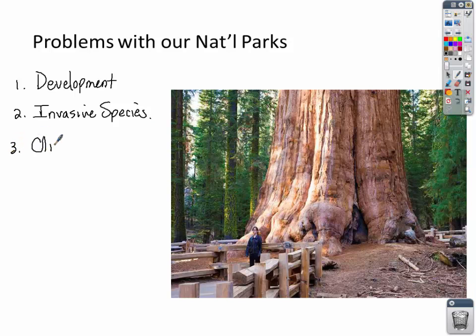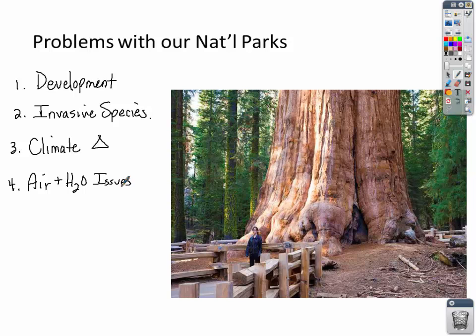Third is climate change — Glacier National Park can literally disappear from it. Fourth are air and water issues — pollution, and water being drained out of national parks. The Colorado River Basin continuously has water diverted for agriculture and cities, becoming drier. The Everglades is also reporting a shortage of fresh water because of demand from nearby cities. Both the Colorado River Basin and the Everglades are examples of national parks experiencing serious water issues.